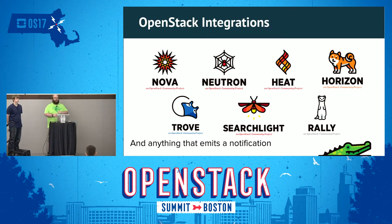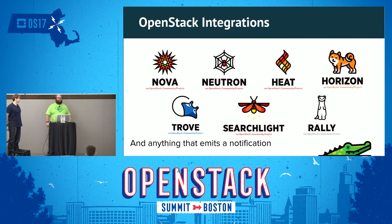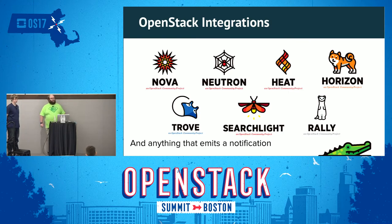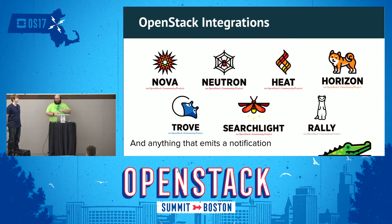We also have a Rally plugin for benchmarking DNS service performance. We have a special sync module that listens to notifications, with example plugins that create records when you create a Nova instance or Neutron port. It allows you to listen to the event queue — so any project that emits events, you can perform an action in Designate. For example, it could create DNS entries for Magnum COE creation events through a simple plugin interface.